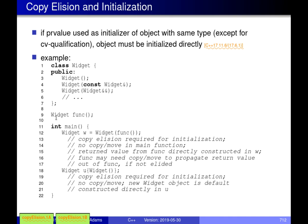We have the same Widget class as our running example. It has a copy constructor and a move constructor, so both operations are available. We have a function called 'funk' which returns a Widget by value, but we don't know its implementation. Because of this, there are multiple situations that can arise — we can't say with certainty whether copy elision inside 'funk' is required or not without seeing its body.